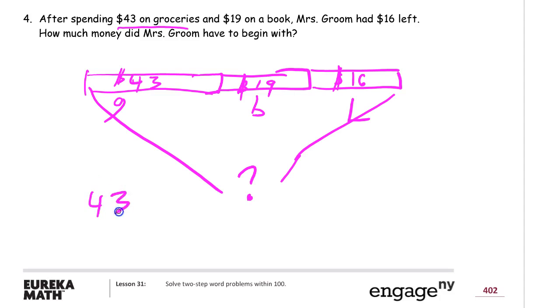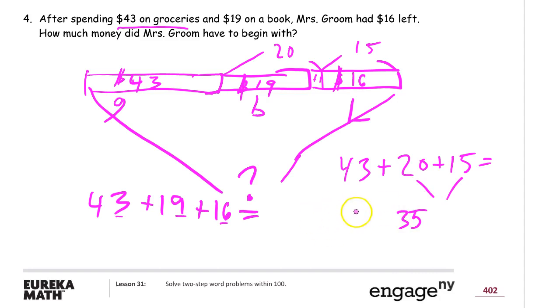So our equation is $43 plus $19 plus $16. The first thing I want to do is look at the ones digits. But I don't see an easy way to make $10 there. But this $19 is pretty close to $20. So I'm going to go up to the tape diagram. And I'm going to think, you know what? What if I took one from the $16 and gave it to the $19? Then I'd have a $20 here. And this $16 would be a $15. This $20 plus $15 would be a lot easier to put together. Right? Then I'd have $43 plus $20 plus $15. And these two together would be $35. And then I'd have $43 plus $35.